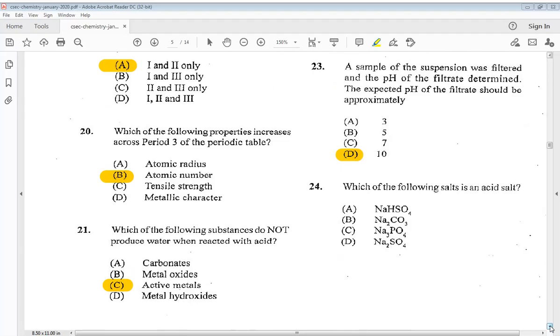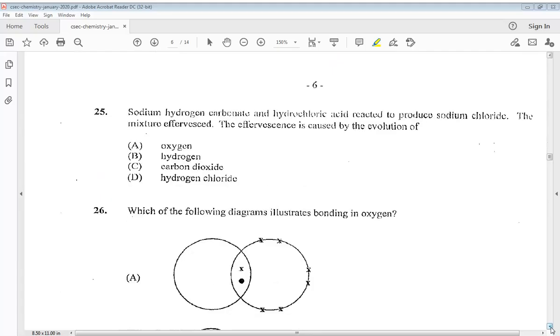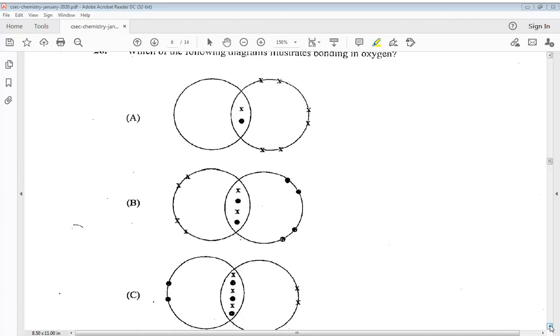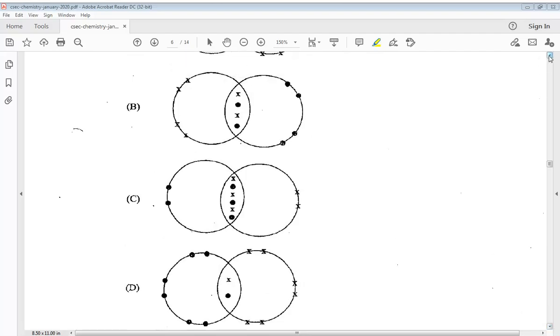24. Which of the following salts is an acid salt? 25. Sodium hydrogen carbonate and hydrochloric acid reacted to produce sodium chloride. The mixture effervesce. The effervescence is caused by the evolution of: A. Oxygen, B. Hydrogen, C. Carbon dioxide, D. Hydrogen chloride. So it is C. Carbon dioxide. 26. Which of the following diagrams illustrates bonding in oxygen? So we can tell it is right here at B.